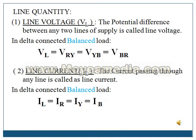Now, why have we put this equal to sign? Because we are studying for balanced load. A load is said to be balanced when all the impedances — representing the impedance in each phase — have equal magnitude, equal phase angle, and are same in nature. Then the load is said to be a balanced load.